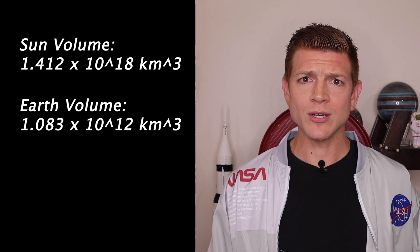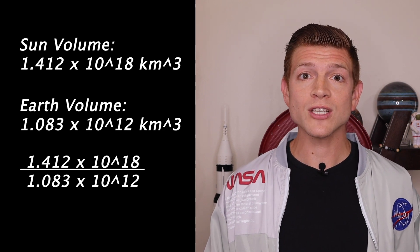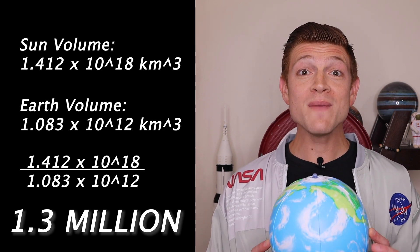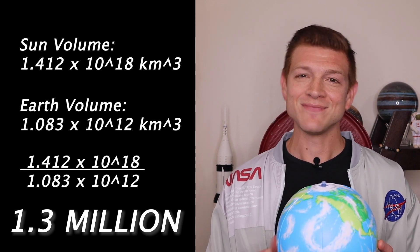Now we got these two big numbers. When you take the sun, divide it by the Earth, and that will give us 1.3 million Earths can fit inside of this sun. There's your answer. 1.3 million Earths.